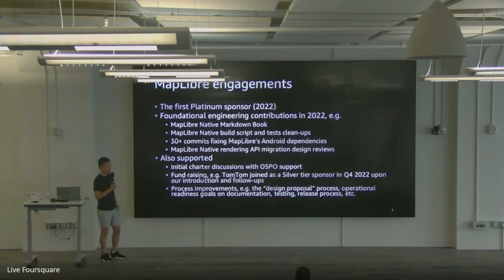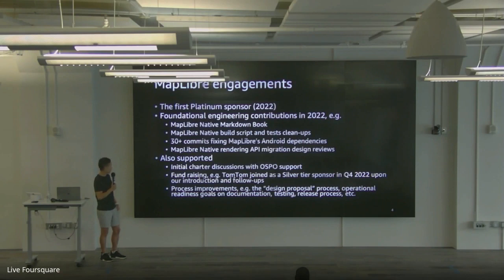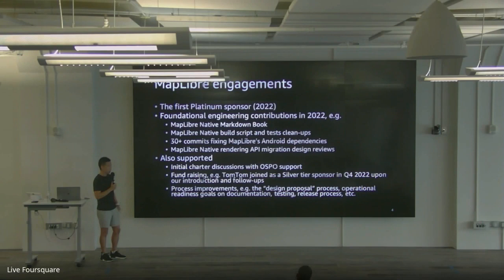Before we did that, it was a pretty painful experience to add features or address bugs, especially in the native renderer project. We also did code build script and task cleanups, fixed dependency issues, and did design reviews when people wanted to make bigger changes. We also supported broader process-wide changes — for example, we connected MapLibre's board with our open source program office to support them in coming up with the first charter of the community. David Neely, our head of open source support, gave the community a lot of good suggestions and we still continuously get help from them.